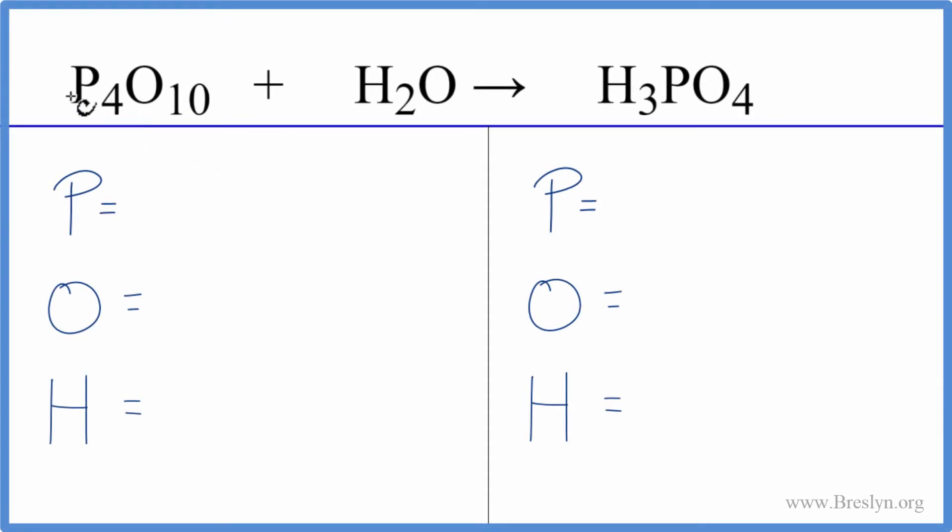In this equation we have tetraphosphorus decoxide plus water combining in a synthesis reaction to make phosphoric acid. Let's count the atoms up and balance the equation.